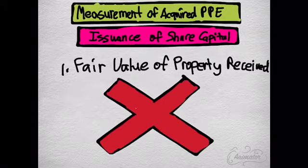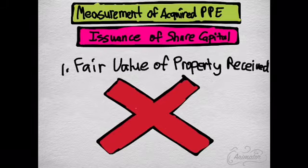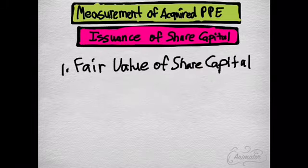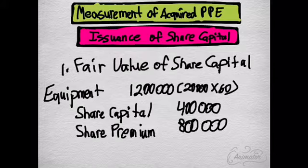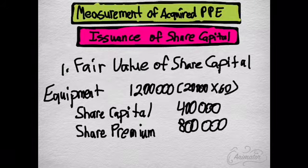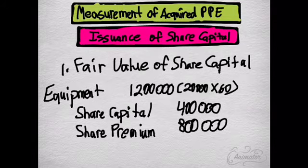But what if the fair value of the property received is not available? Then we would go to the fair value of the share capital. We would debit equipment for 1,200,000 — which we get by multiplying the shares issued by the quoted price per share of 60 — then credit share capital with the same amount of 400,000, and the excess of 800,000 would be credited to share premium.